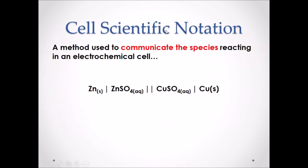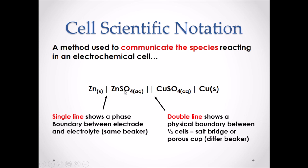Cell scientific notation is a method used to communicate the species reacting in an electrochemical cell. The single line shows a phase boundary between the electrode (the solid) and the electrolyte solution in the same beaker. The double line shows the physical boundary between the two half cells — you can also think of it as the salt bridge, although it doesn't show the species in the salt bridge. On the other side of the double line, we have the other half reaction, with the solid as the electrode and the aqueous solution as the electrolyte.